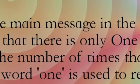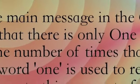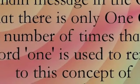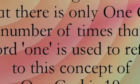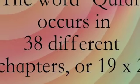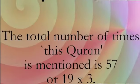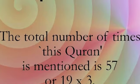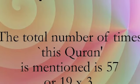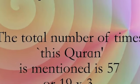The basic message of the Quran is that there is only one God. The number of times the word 'one' refers to God is exactly 19. The word 'Quran' occurs in the Quran in 38, or 19 times 2, chapters. The word 'Quran' referring to the Quran occurs 57 times, or 19 times 3.